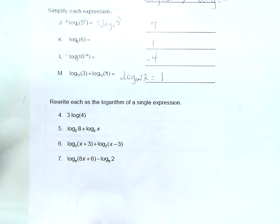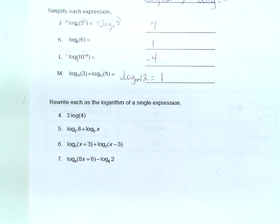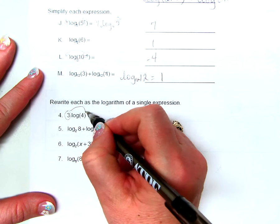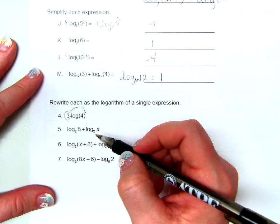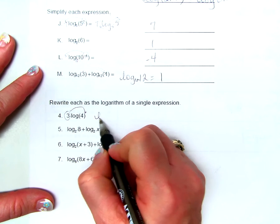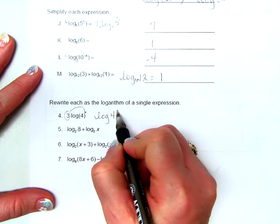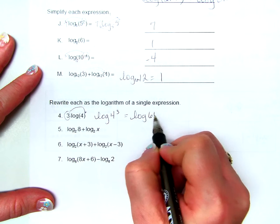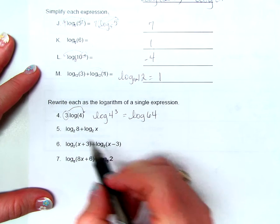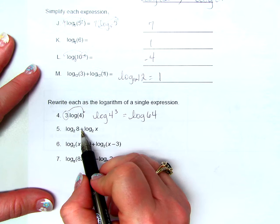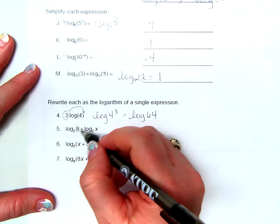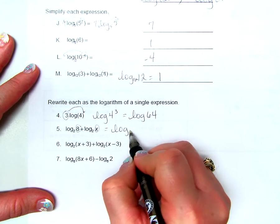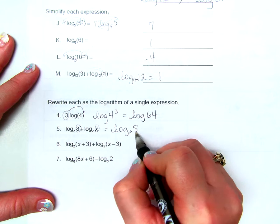Rewriting as a single expression: 3 becomes an exponent, giving log of 4 to the 3rd power, which is log of 64. For the next problem, adding like logarithms means multiplying the arguments, giving log base 2 of 8x.